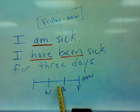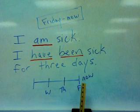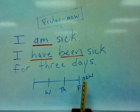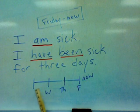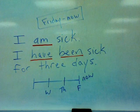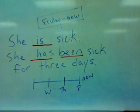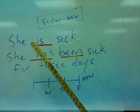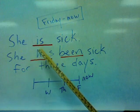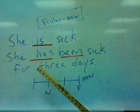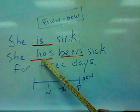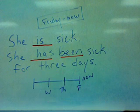Wednesday, Thursday, Friday — I'm sick now. But this shows when the sickness began: Tuesday or Wednesday. If you change the subject to 'she,' the verb changes to 'is': She is sick. And then in the present perfect tense, use 'has': She has been sick for three days.